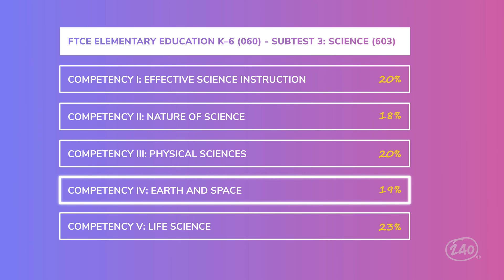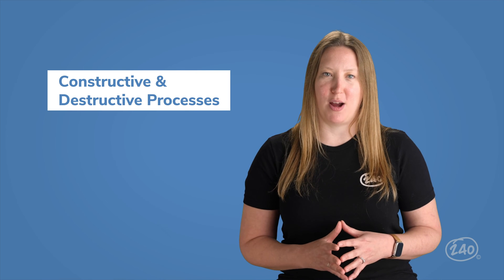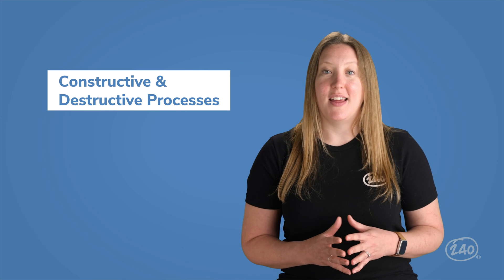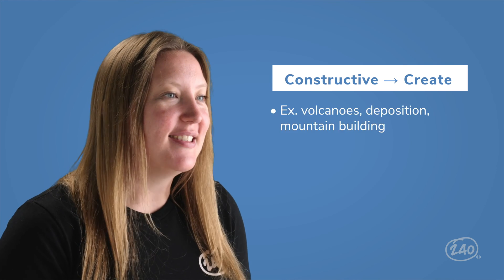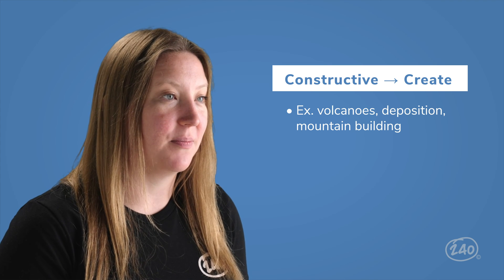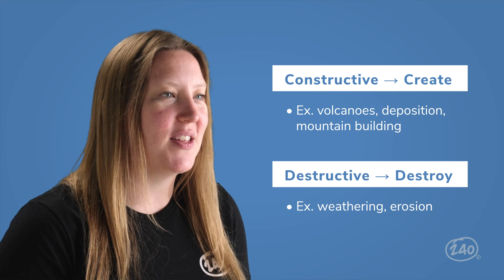Next up, Competency 4, Earth and Space. This one's all about the Earth — think geologic formations, rocks and soil — and space — think the Sun-Earth-Moon system, our solar system, and more. We're going to focus on constructive and destructive processes, which shape the Earth. They can happen slowly over millions of years or rapidly. Constructive and destructive surface processes are defined with relation to the continental land. Constructive processes create — examples include volcanoes, deposition, and mountain building. Destructive processes destroy — examples are weathering and erosion.